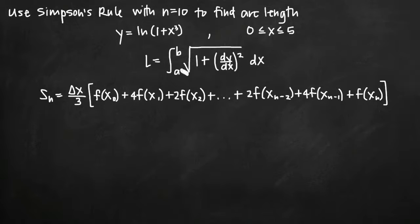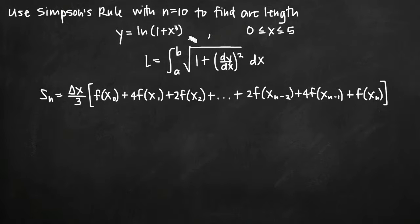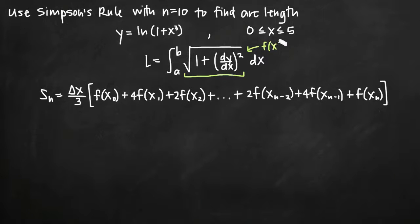So instead of using the arc length formula to find exact arc length, we're going to use the Simpson's rule formula to find an approximation. One thing we are going to need the arc length formula for is finding our function f. The interesting thing about a problem like this is that when we use Simpson's rule, normally you plug in values x sub 0, x sub 1, x sub 2 into your function. You might think you'd plug them into y equals natural log of 1 plus x cubed, but in fact you need to find this value — the expression under the square root — because that is what we're going to call f, the function we'll plug our values into.